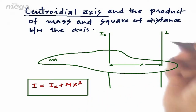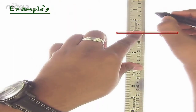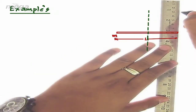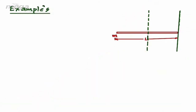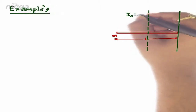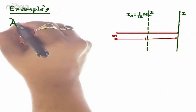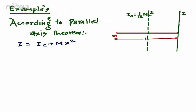Let us take some illustrations using parallel axis theorem. Let us consider a rod having mass M and length L. Let this be the centroidal axis of the given rod. We are required to find the moment of inertia of the rod along a given axis at the end. The moment of inertia of the centroidal axis of any given rod is equal to 1/12 ML². Let I be the moment of inertia of this given axis; according to parallel axis theorem, I = Ic + Mx², where X is the distance between both the axes.